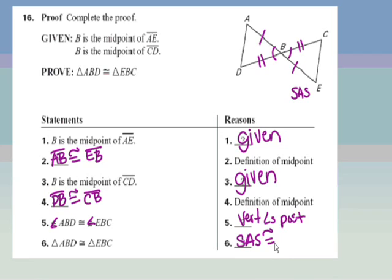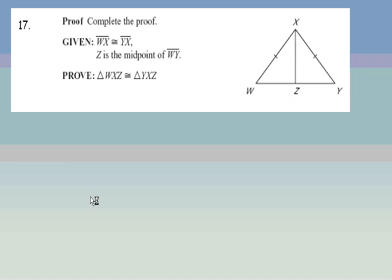Do you understand why you didn't get it right if you didn't? If you answered no to both of those questions, please see me in class. Here's a proof you need to write completely on your own. Hit pause and complete it. If you need a hint: we've got the given sides marked, Z is the midpoint so we can mark those congruent, and they share a side — which means we should be proving side-side-side congruence. Hit pause and complete the proof based on that information.